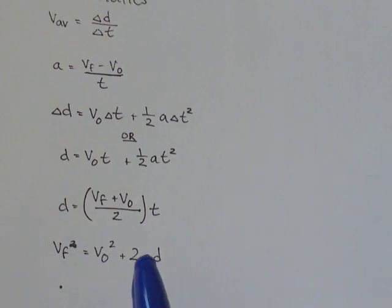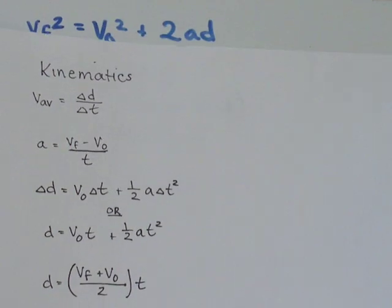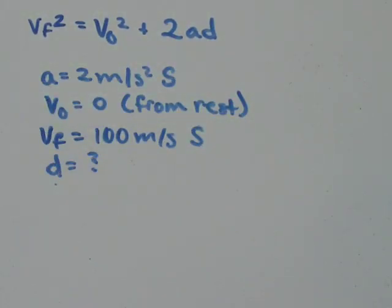Hey guys, in this video we're talking about using the last formula here in our formula sheet. So that formula says VF squared equals V0 squared plus 2ad.